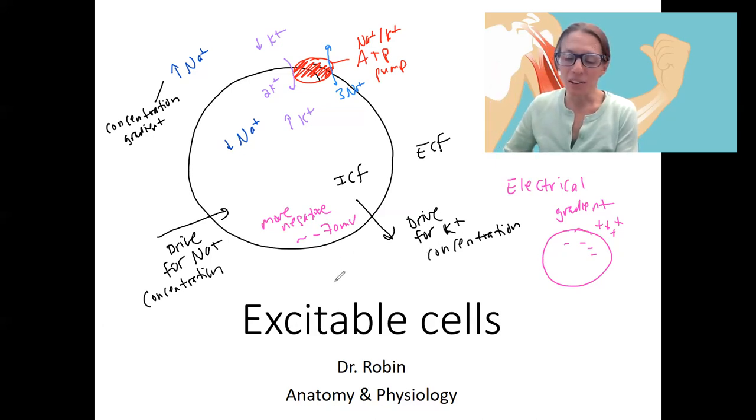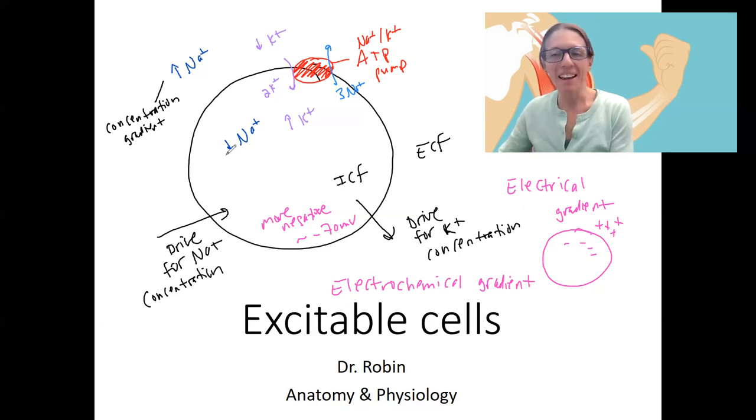And these two sum together to create an electrochemical gradient. Because the two are related, these ions both have a physical presence of their concentration and a charge to them. So we'll have to consider both.